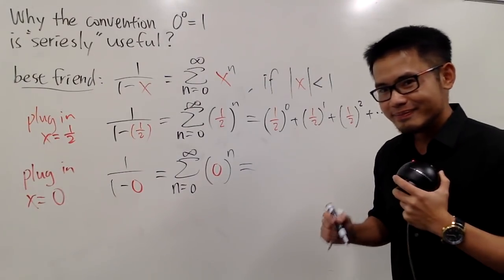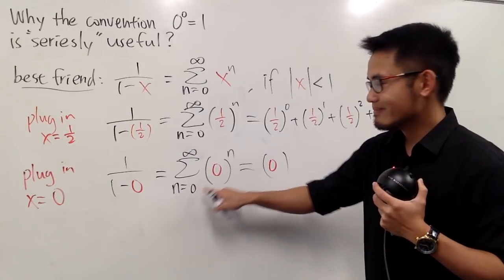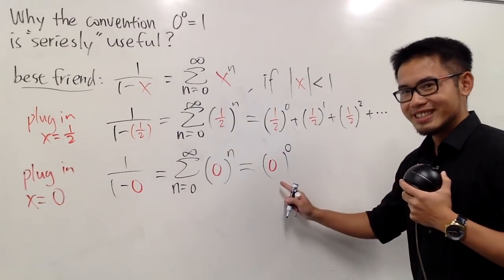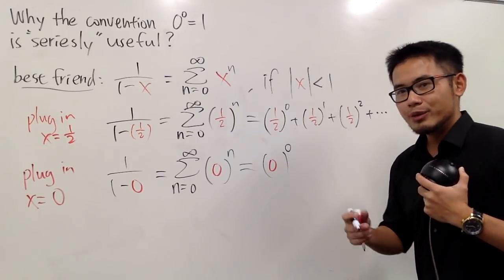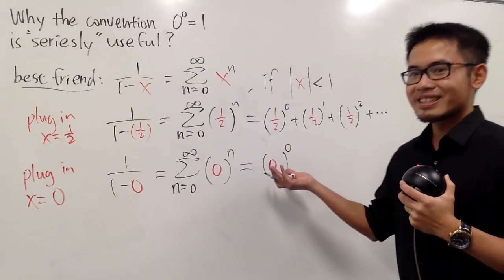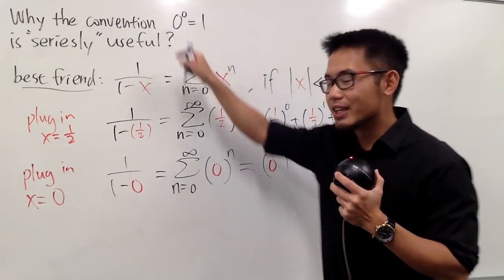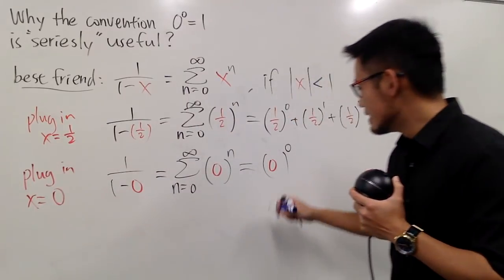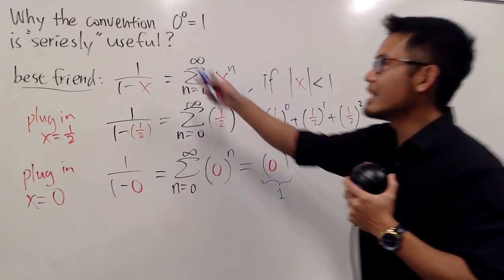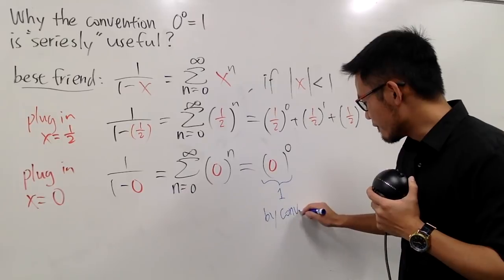What's the first term? Well, we have 0 for the base, n, which is 0 to here, ah-ha, for the power like this. What's this? 0 to a 0. In your algebra class, if you didn't have any convention, then we will be stuck. But now, with this convention being said, we can say that this is equal to 1 by convention. So, I'll just say, this is by convention.